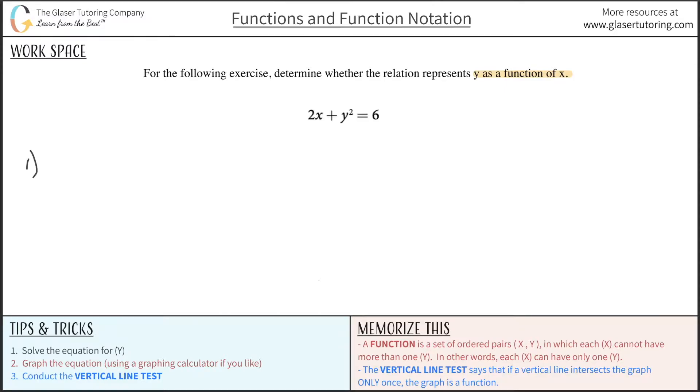So let's do that over here on the left hand side. We have 2x plus y squared is equal to 6. So if I solve this thing for y, I have to first subtract the 2x over to the right hand side. And that would leave me now with y squared is equal to negative 2x plus 6.